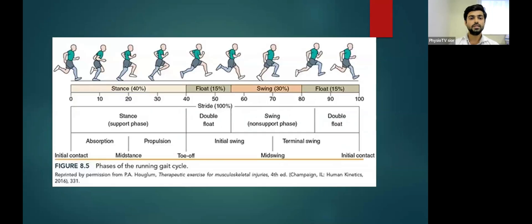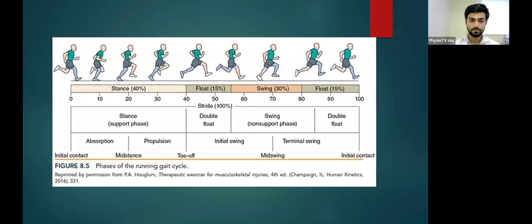We can see the distribution of the stance and swing phase in this diagram. The stance phase constitutes 40% of the running phases. The swing phase constitutes 30%. There is also a double floating phase, which constitutes a total of 15%, occurring in between the stance and the swing phase.